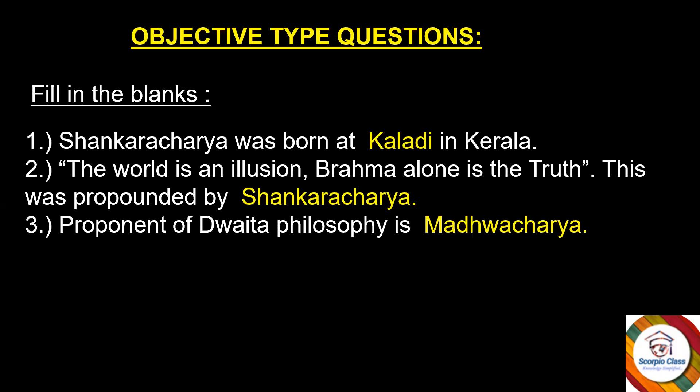First: Shankaracharya was born at __ in Kerala — answer is Kaladi. Next: 'The world is an illusion, Brahma alone is the truth' — this was propounded by __ — answer is Shankaracharya. Next: Proponent of Dvaita philosophy is __ — answer is Madhavacharya. The highlighted word is your answer. These are a few important objective questions from this chapter.